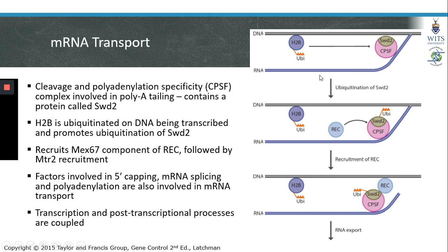Proteins involved in poly-A tailing are also linked to mRNA export. The cleavage and polyadenylation specificity factor, CPSF, remains associated with the mRNA after catalyzing the formation of the poly-A tail. The CPSF protein complex contains a protein called SWD2. SWD2 can be impacted by histone ubiquitination — specifically, ubiquitination of H2B on the DNA strand being transcribed can promote ubiquitination of SWD2, and a ubiquitinated SWD2 is linked to recruitment of REC.